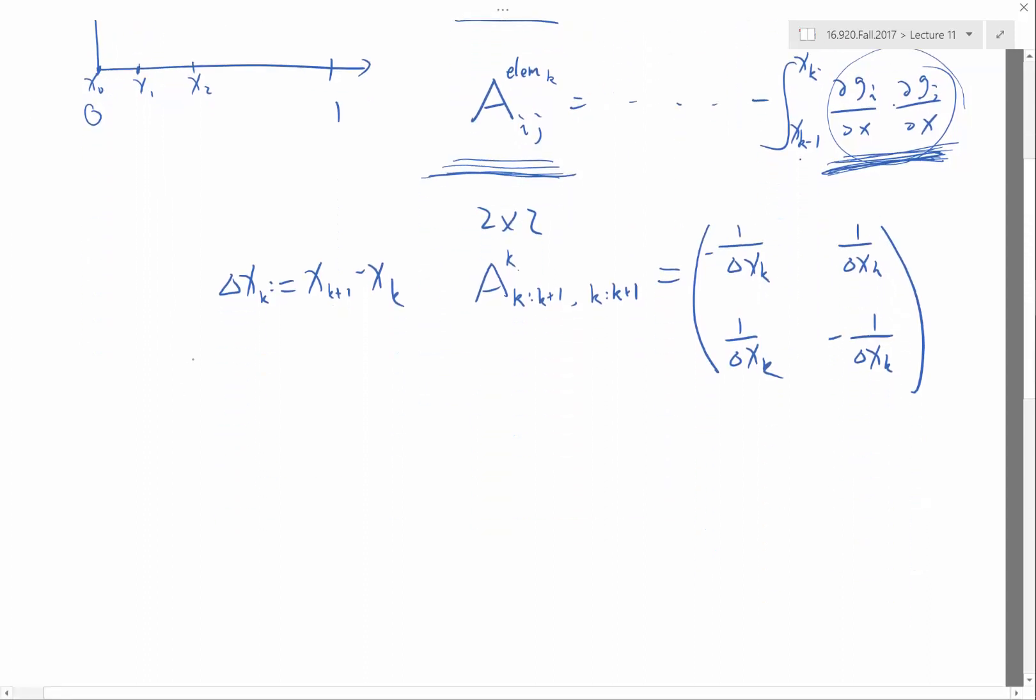So for the one-dimensional case, it's very simple. You get the first element matrix is 2 by 2. The second element matrix is also 2 by 2, but it overlaps with the first one, just on one entry. The third one overlaps with the second one, the fourth one overlaps with the third one, and so on. And you get added elements.